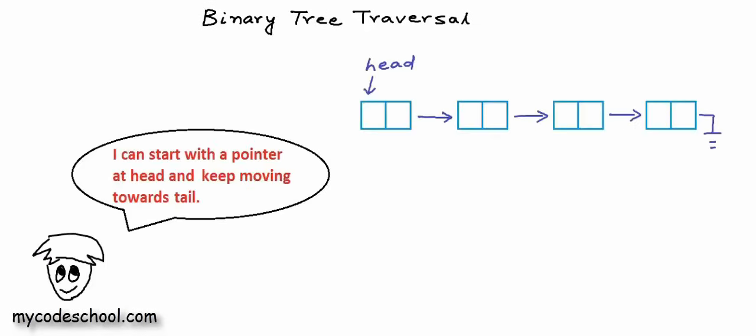Tree is not a linear data structure like array or linked list. In a linear data structure, there would be a logical start and a logical end, so we can start with a pointer at one of the ends and keep moving it towards the other end. For a linear data structure like linked list, for each node or element, we would have only one next element.